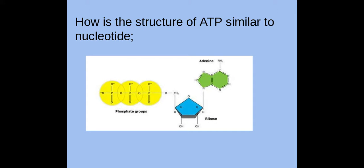ATP is really similar to a nucleotide because it's comprised of a pentose sugar, a nitrogenous base, and at least one phosphate group. However, as you can see in this image, it has three phosphate groups. It has a ribose sugar, so it's most similar to an RNA nucleotide — not DNA, because DNA has a deoxyribose sugar whereas RNA has a ribose sugar — and it has an adenine base.